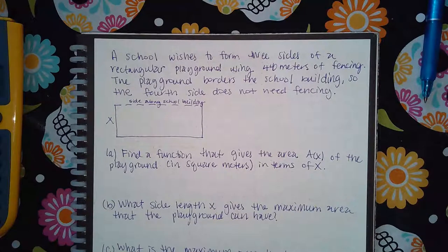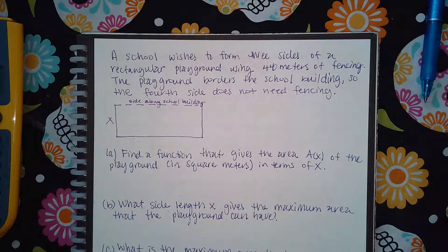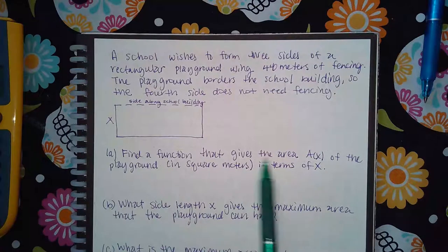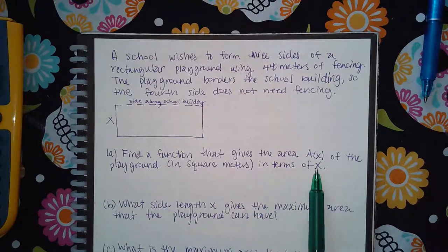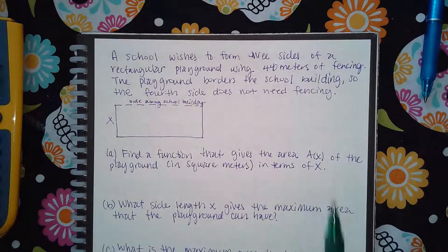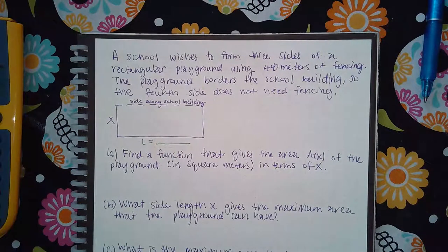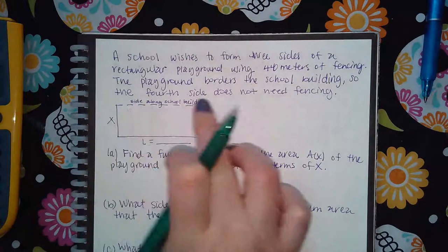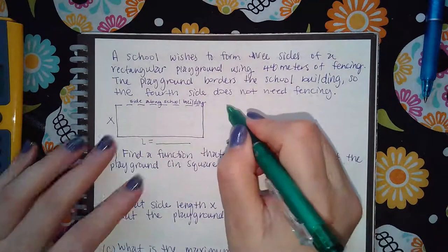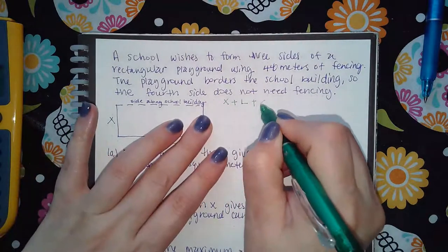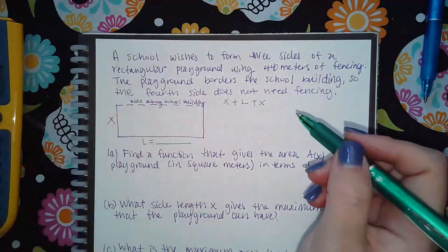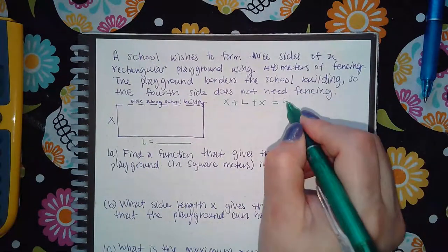The second example: a school wishes to form three sides of a rectangular playground using 440 meters of fencing. The playground borders the school building, so the fourth side does not need fencing. Find a function A(x) for the area of the playground. Because one side is not fenced, the fencing equation is x + L + x = 440.